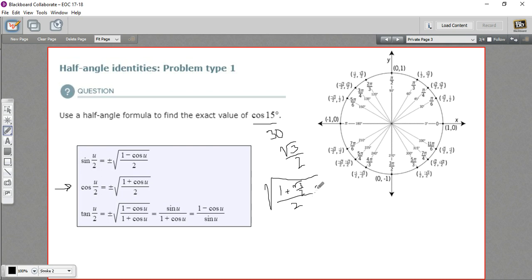And just like last time, underneath the radical sign I'm going to multiply by 2 over 2. On the top, that's going to give me 2 plus the square root of 3. On the bottom, that's going to give me 4. And then taking the square root of the bottom, I just get 2 plus the square root of 3, all over 2.